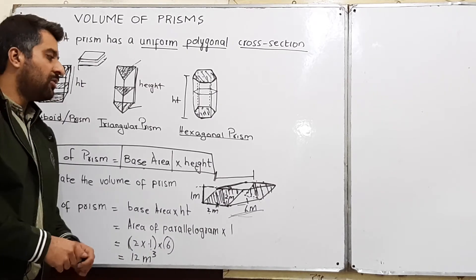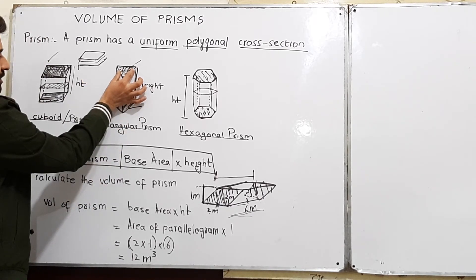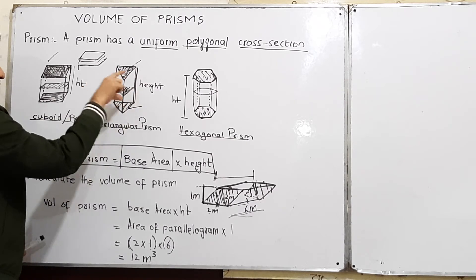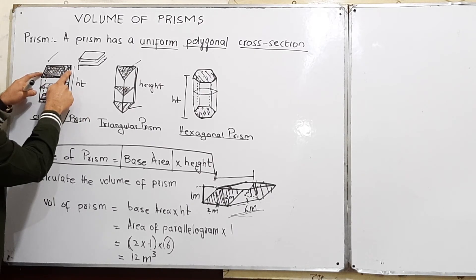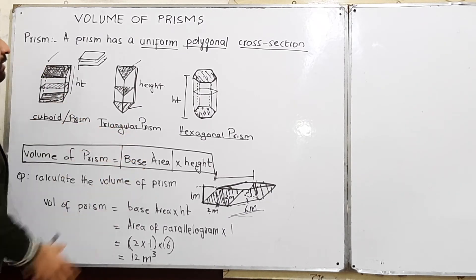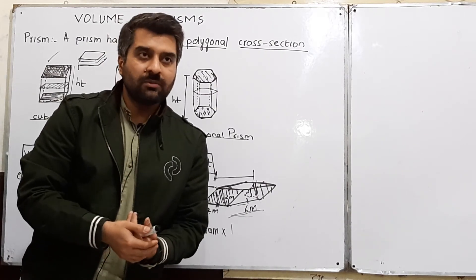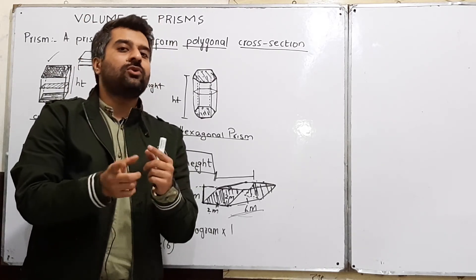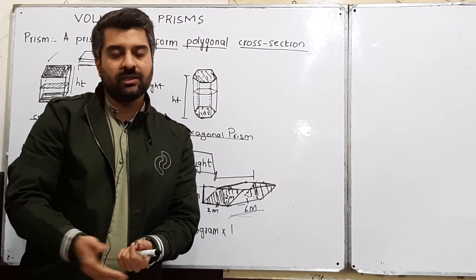If you want the volume of a triangular prism, multiply the area of the triangular base by the height — the distance between the two bases. For a rectangular prism, multiply the area of the rectangle by the height. Prisms can have different bases: a trapezium, a parallelogram, and so on. You need to know how to calculate areas of different shapes to find volumes of prisms. We are going to cover surface area of prisms, cylinders, and volumes in the coming lectures. Thank you.